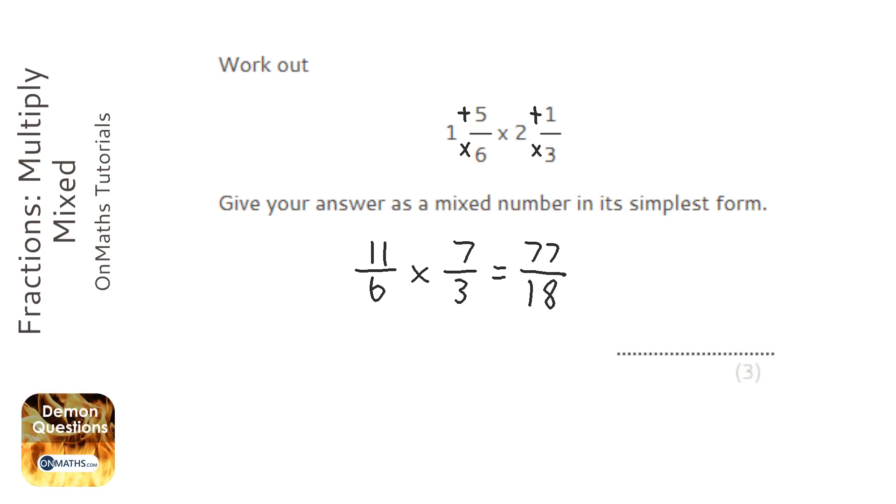Now we've got to leave our answer as a mixed number. So we've got to work out how many 18s we can take away from 77, to find out what the whole number is going to be.